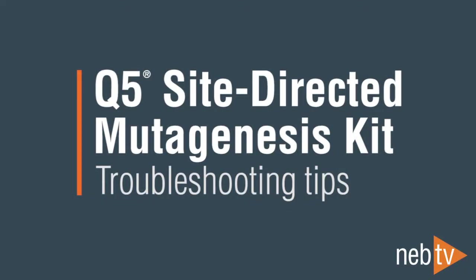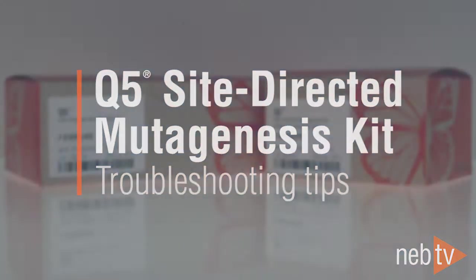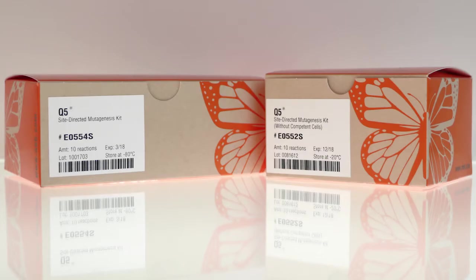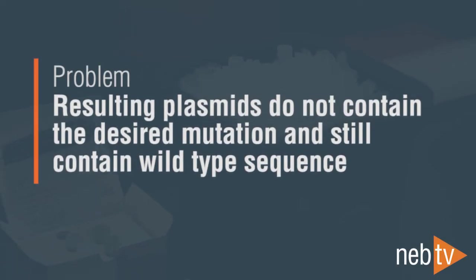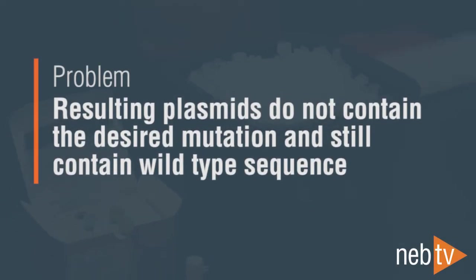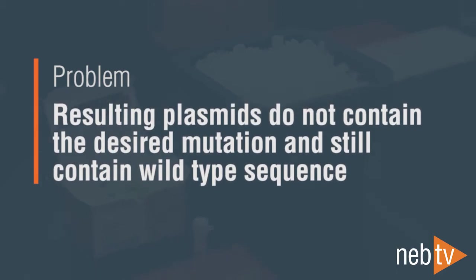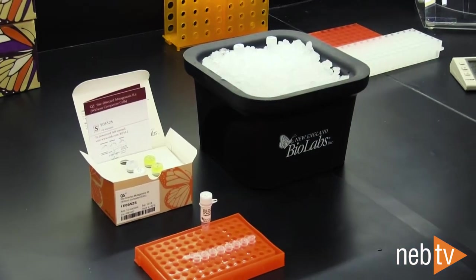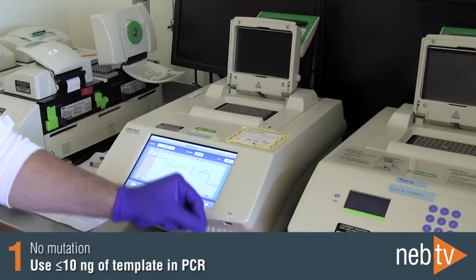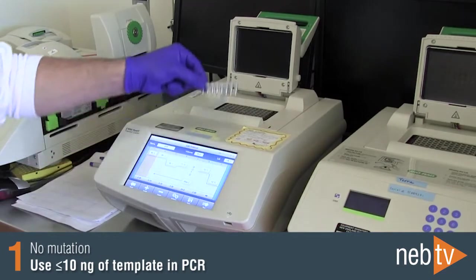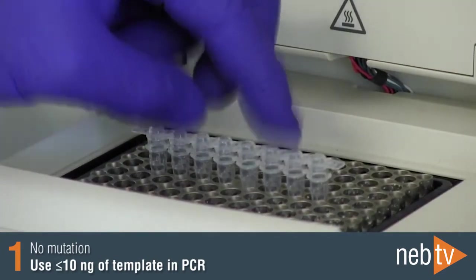The following tips can be used to help optimize reactions when using NEB's Q5 site-directed mutagenesis kit. If you find that the resulting plasmids do not contain the desired mutation and still contain wild-type sequence, we recommend using less than or equal to 10 nanograms of template in the PCR step.